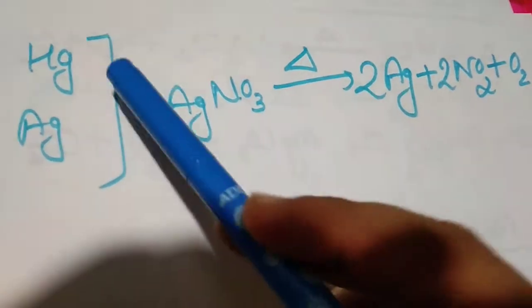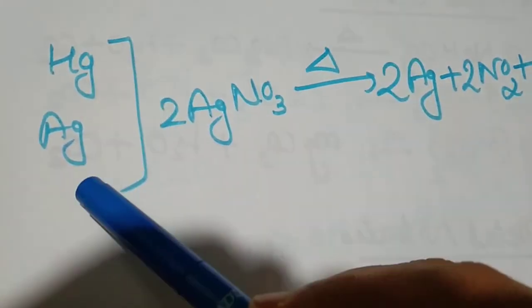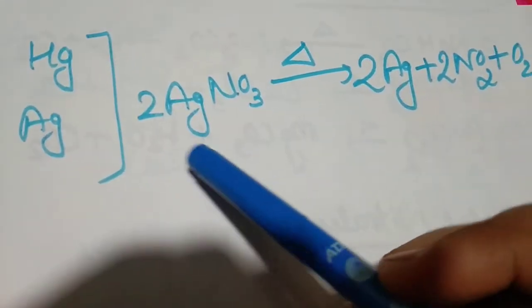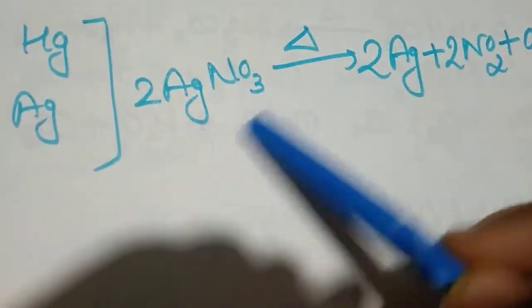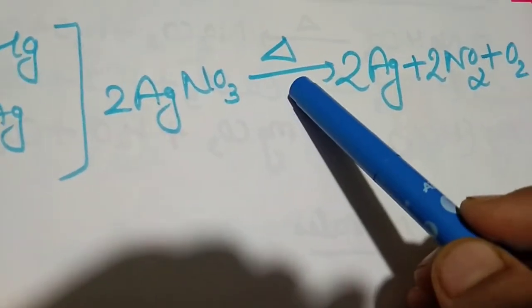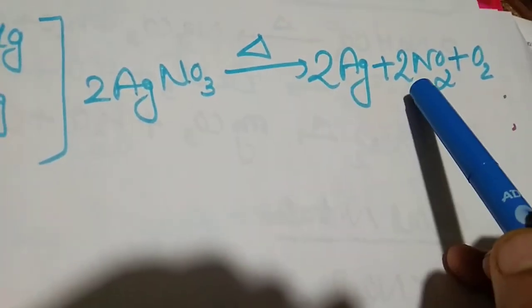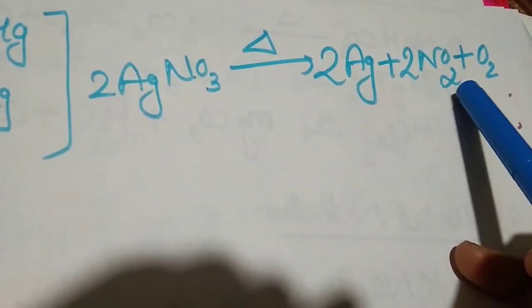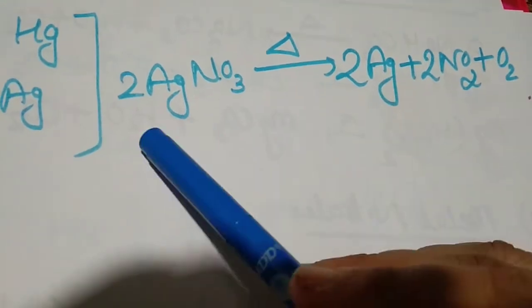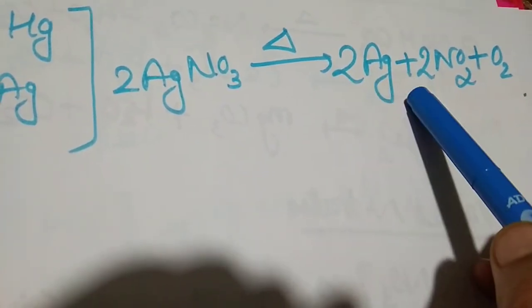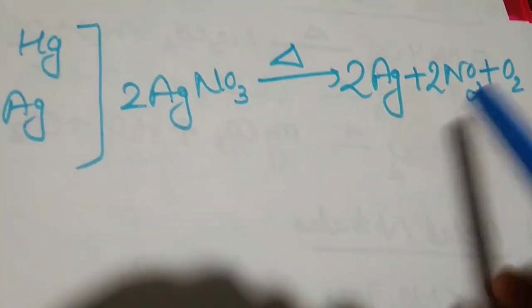The least reactive metals we have last are mercury and silver. Upon decomposition, when their nitrates are heated, what do they give? They give us metal plus nitrogen dioxide and oxygen. Similarly mercury gives mercury plus NO2 and O2.